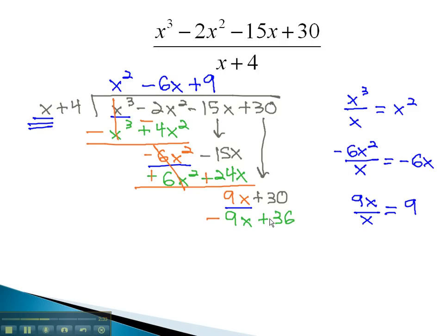As we combine, we change the sign to get negative 6 for our final remainder.